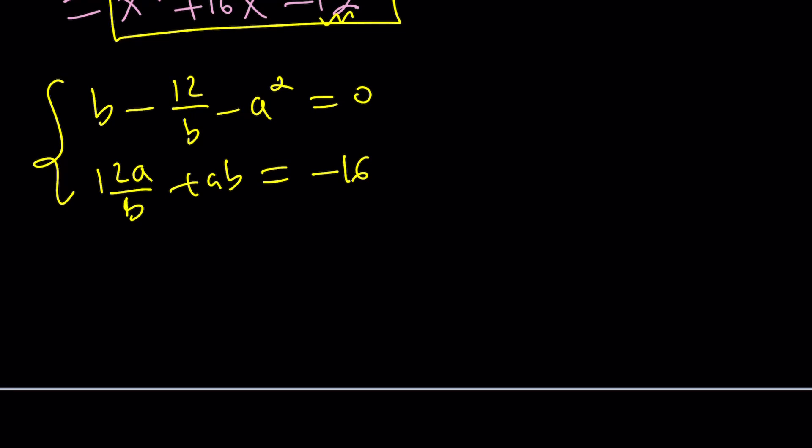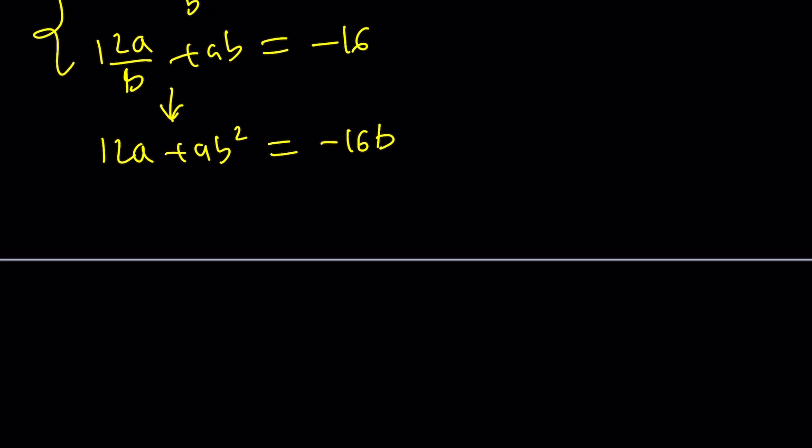Let's go ahead and write it down. b minus 12 over b minus a squared is equal to 0, and 12 a over b plus a b is equal to negative 16. So that's the system we need to solve. And to be able to solve this system, we could probably isolate one of the variables in terms of the other, and then substitute and solve for the other variable. Well, if I look at the first equation, they're both quadratic. So let's go ahead and focus on the second one. First, 12 a plus a b squared is equal to negative 16 b, if I multiply both sides by b. And then I can go ahead and actually isolate a here. So let's take out an a, 12 plus b squared equals negative 16 b. And then from here, a can be written as negative 16 b divided by b squared plus 12.